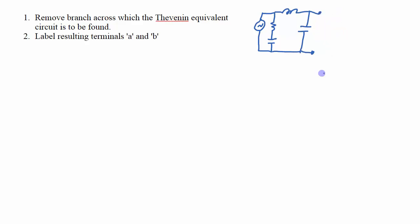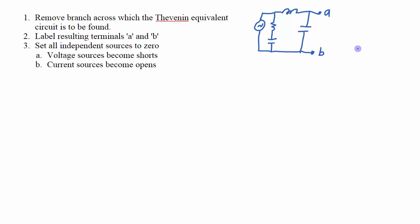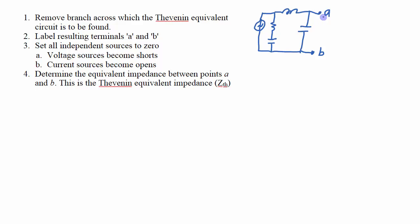The second step is to label the resulting terminals A and B — just for housekeeping. The next step is to set all of the independent sources to zero. Voltage sources become shorts, current sources become opens. So since this is a voltage source, that would become a short; if this were a current source, I would break the circuit there and it becomes an open. Then the next step is to find the equivalent impedance between points A and B after you've set all the sources to zero.